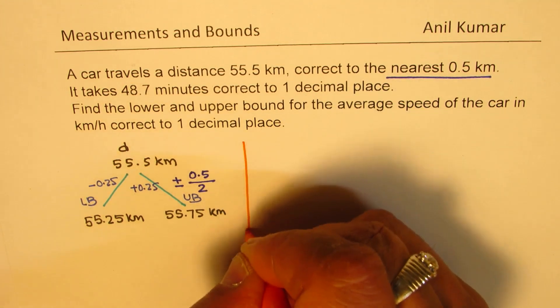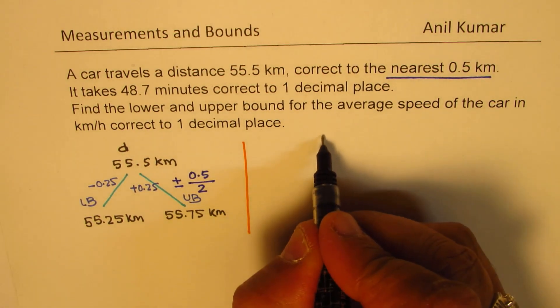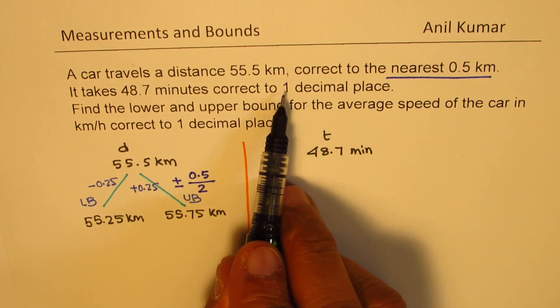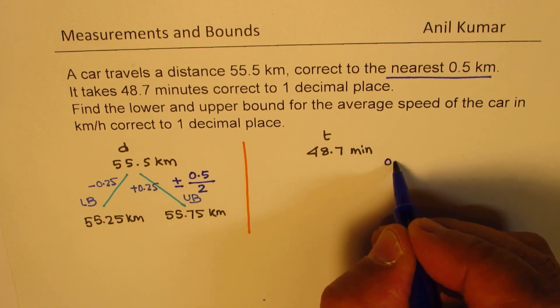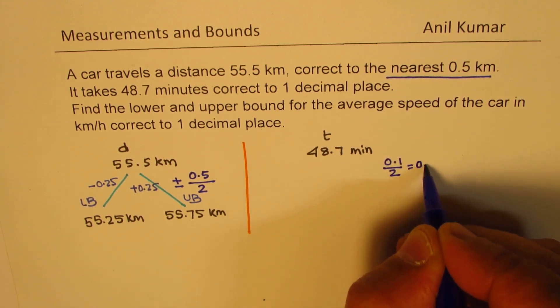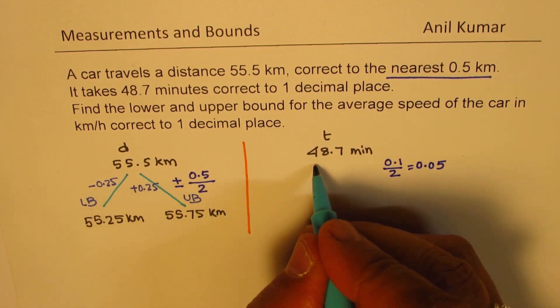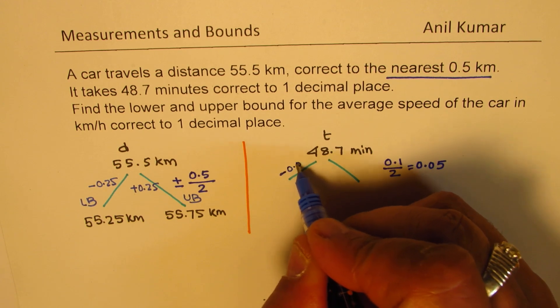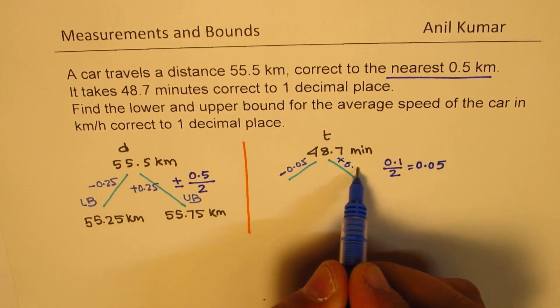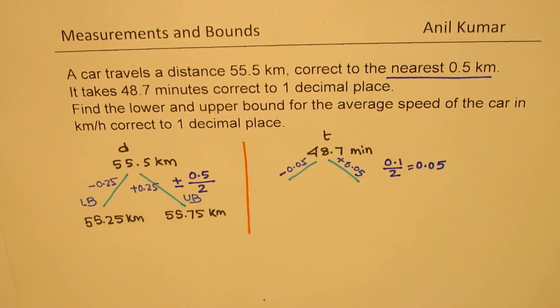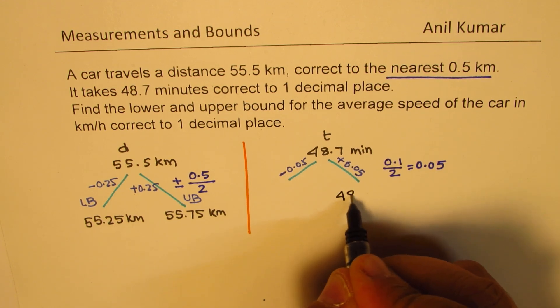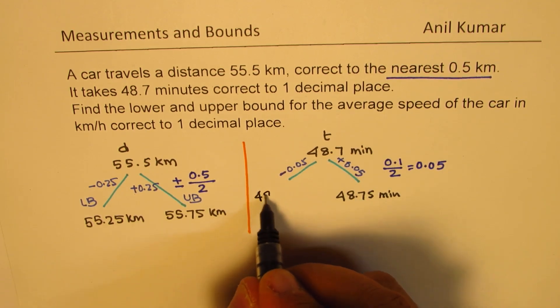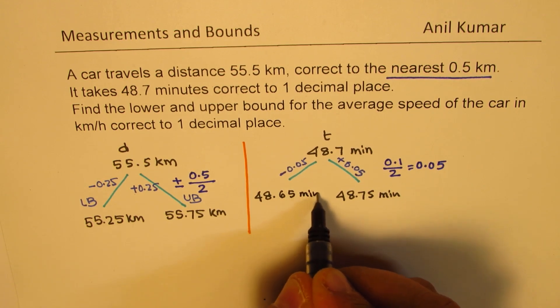Now, let's do the same exercise for time. Time given to us is 48.7 minutes. And accuracy is one decimal place. One decimal place means 0.1. Half of this equals 0.05. So we have to add and subtract 0.05. If I subtract 0.05, I get the lower bound. And if I add 0.05, I get the upper bound. So, let's add first. We get 48.75 minutes. And if I take away, it becomes 48.65 minutes.